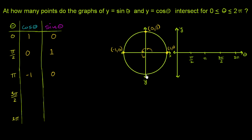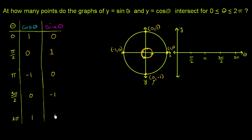At 3 pi over 2 we are at coordinate (0, -1), so cosine of theta is 0 and sine of theta is -1. Then finally at 2 pi, we've made a full revolution around the circle and we're back to the same point as theta equals 0, so cosine of theta is 1 and sine of theta is 0.